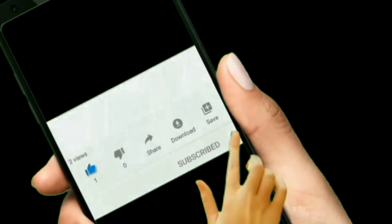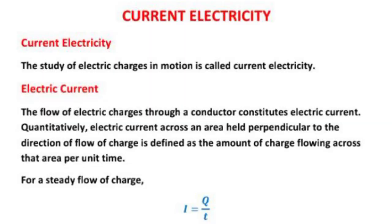Then what is electric current? The flow of electric charges through a conductor is called electric current. Numerically, we can write it as I equal to Q upon T. The unit of electric current: if Q equals 1 coulomb and T equals 1 second, then I will be 1 coulomb upon 1 second, and this is called ampere. So the unit of electric current is ampere.